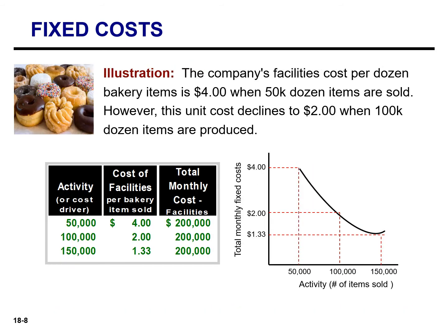Let's look at the per unit cost. The company's facilities cost per dozen is $4 when 50,000 dozen items are produced or sold, but that number decreases to $2 when selling 100,000 dozen donuts. That math involves taking our total cost of $200,000 and dividing it by the number of units produced. So as we produce more dozen donuts, our fixed cost per unit will decrease.